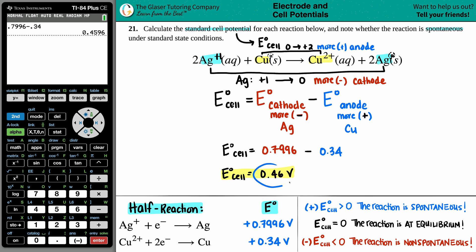In this case, 0.46, that's a positive value. So we know that this reaction is spontaneous under standard state conditions, which means that no additional amount of energy is needed to make this oxidation reduction reaction happen. And that's it.